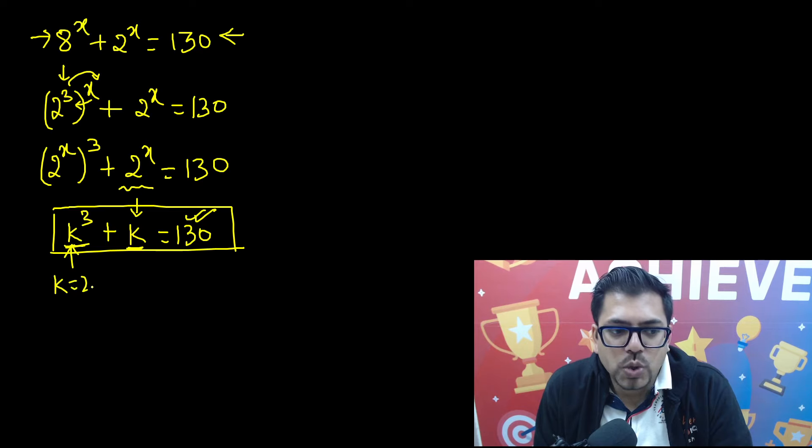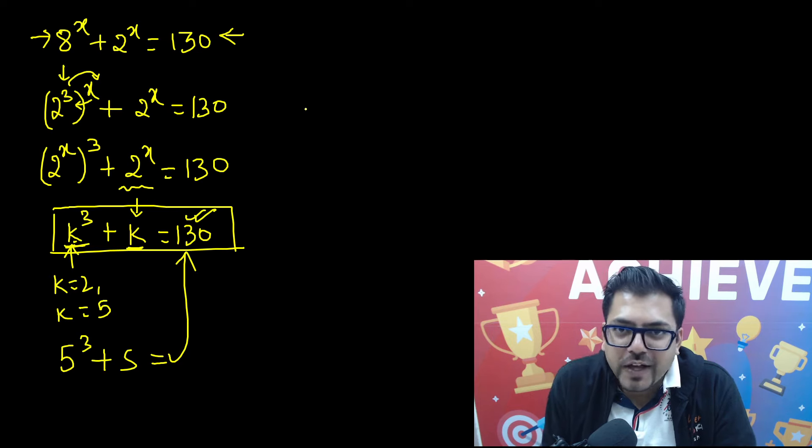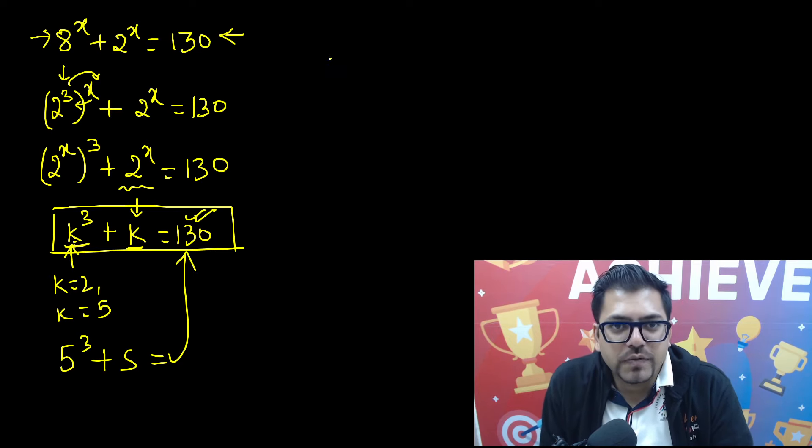Smaller numbers won't work because if I put k equals 2 or 3, their cube is 8 and 27, very small. So I'll directly go to k equals 5 because that cube gives me a larger number. So k raised to power 3, 5 raised to power 3, will give me 125 plus 5, that is satisfying 130. So by hit and trial we have got a root: the zero of this polynomial is k equals 5.